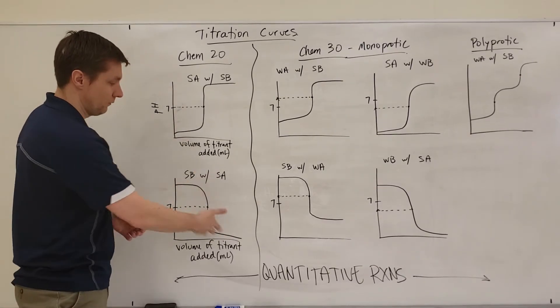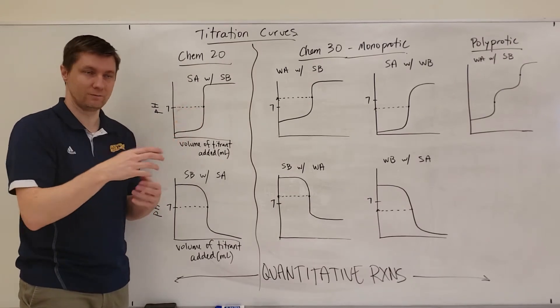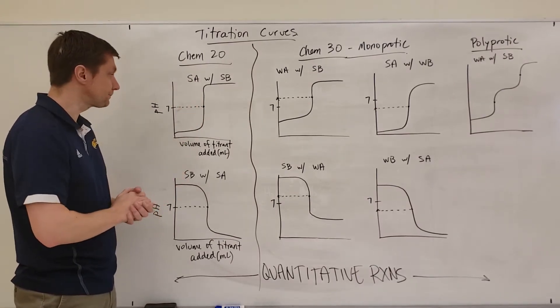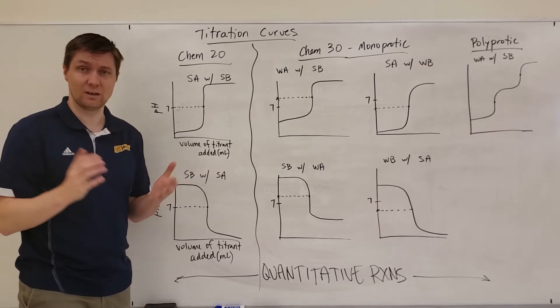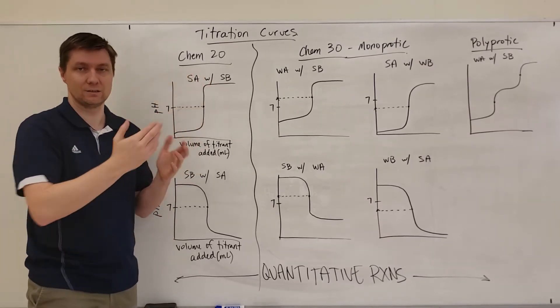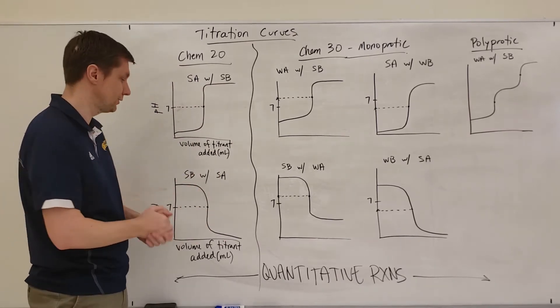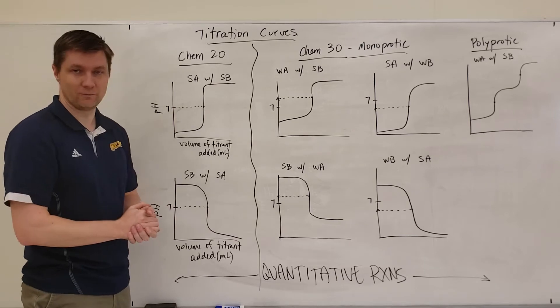But the thing to point out is that the equivalence point, which is the middle of this peak, is at a pH of 7. And so this shows that the strong acid with the same concentration is being neutralized by a strong base with the same concentration. And also for this.